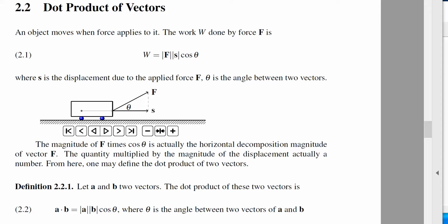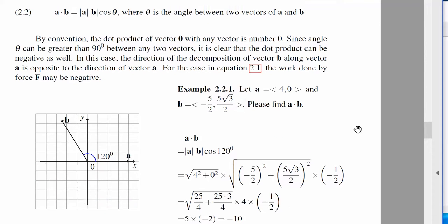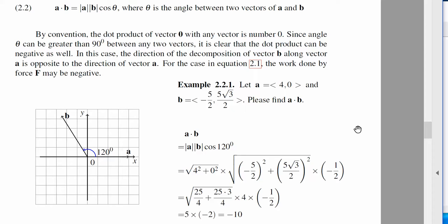Now let's look at one of the examples here. Example one, we are given vector A which is (4, 0). We are given vector B which is negative 5 over 2 and the Y component is 5 radical 3 over 2, which is basically vector B here. So A is horizontal direction 1, 2, 3, 4 and 0.